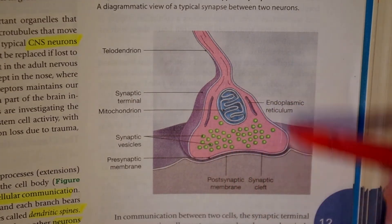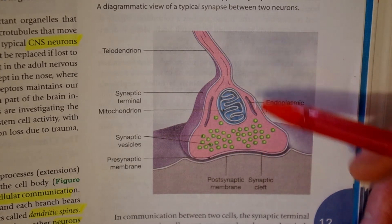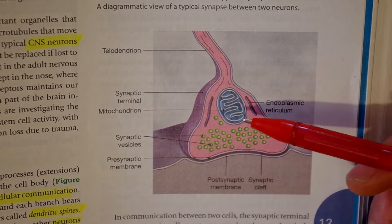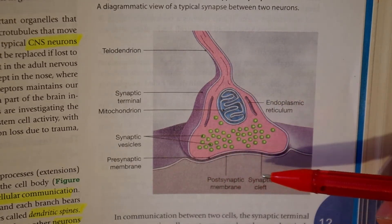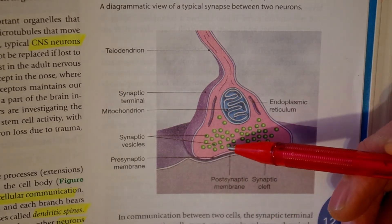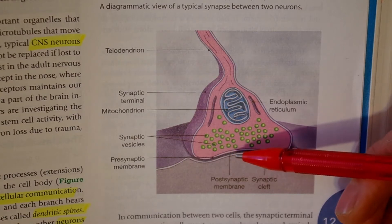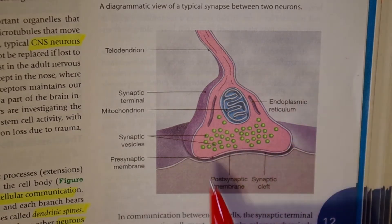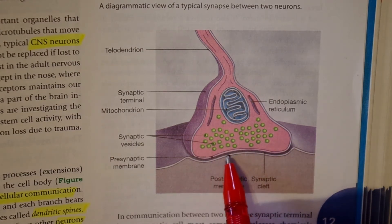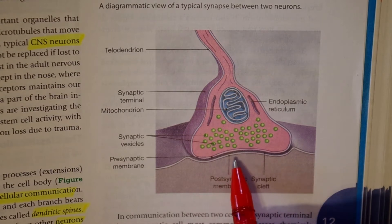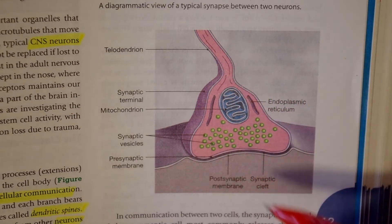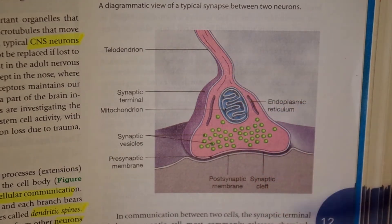The release of neurotransmitters is triggered by electrical events such as the arrival of an action potential. The neurotransmitters then flood the synaptic cleft and affect the activity of the postsynaptic cell, thus producing a response. The synaptic vesicles release the neurotransmitters which cross the presynaptic membrane, cross the synaptic cleft, and cross over to the postsynaptic membrane. This way neural impulses can be transferred from one cell to the next.